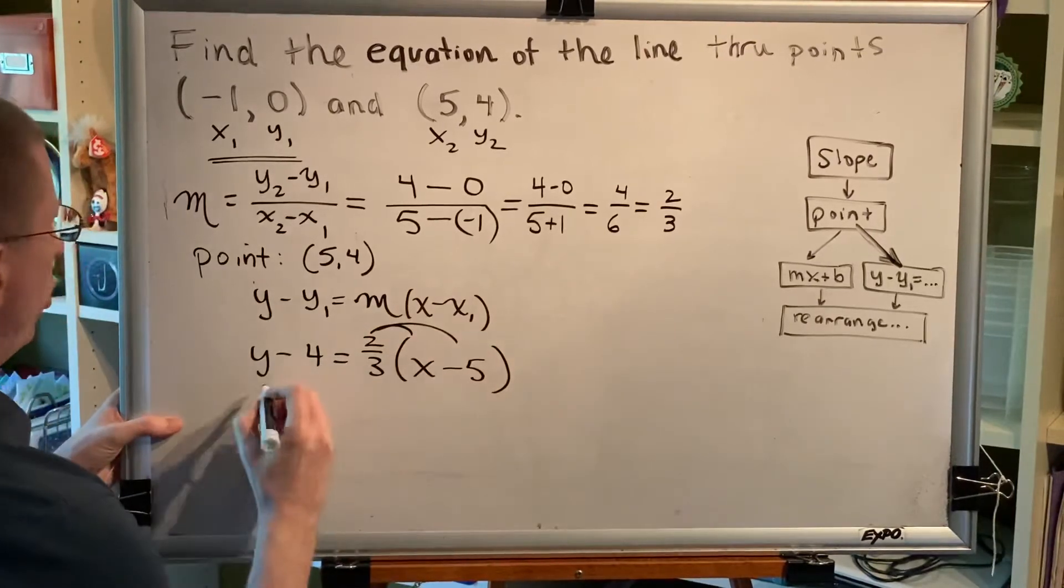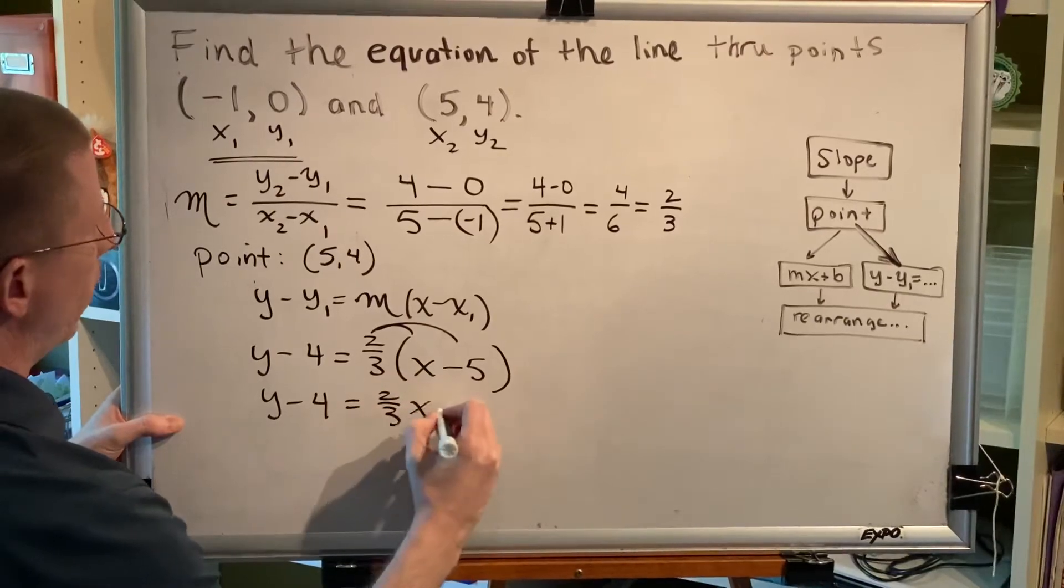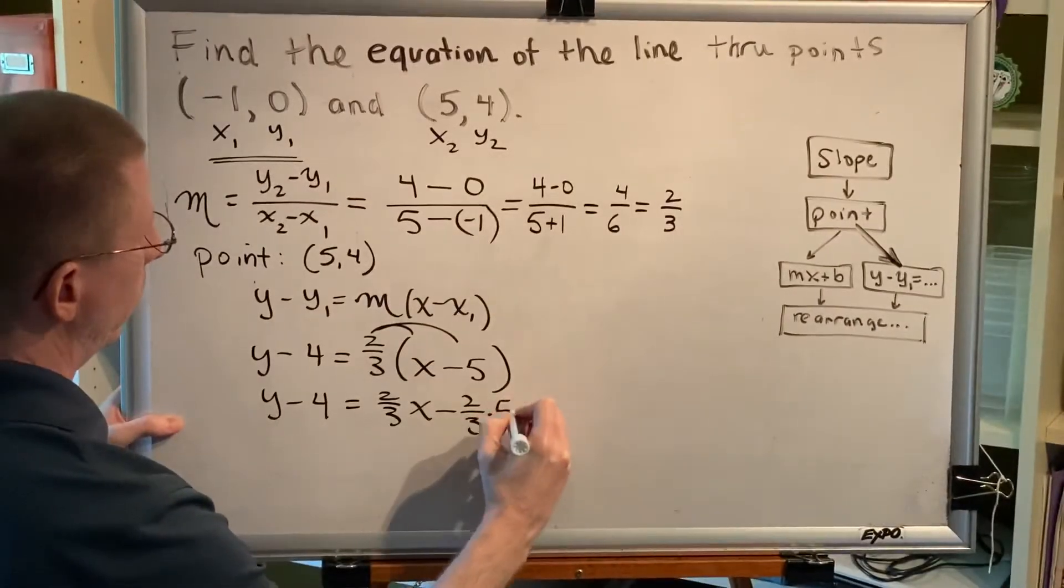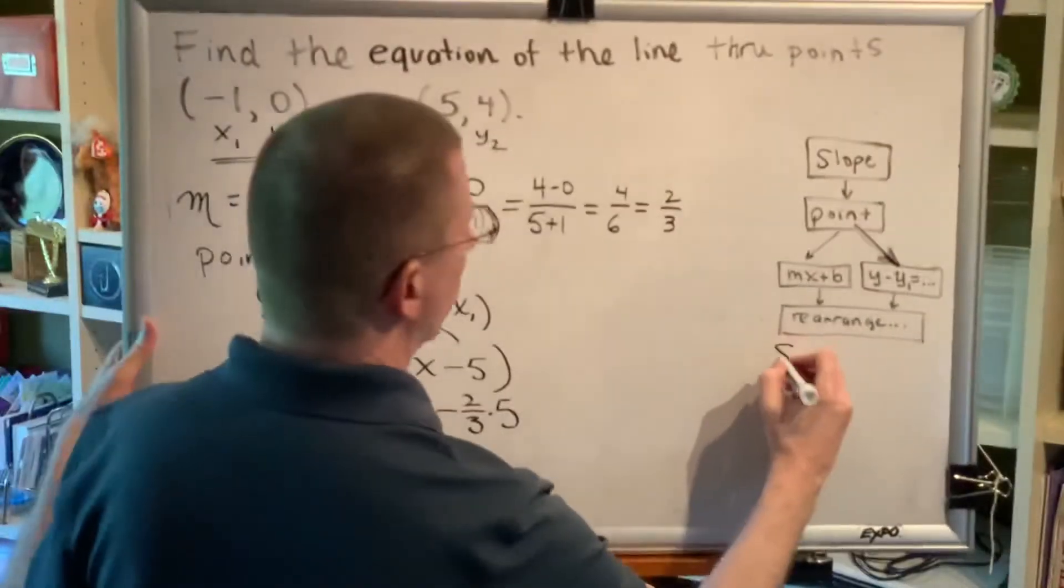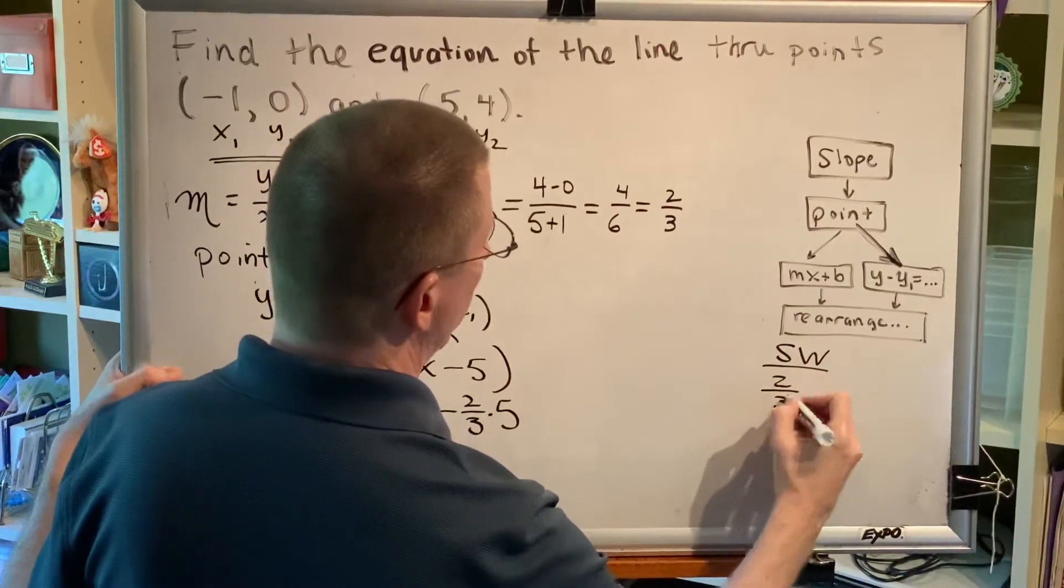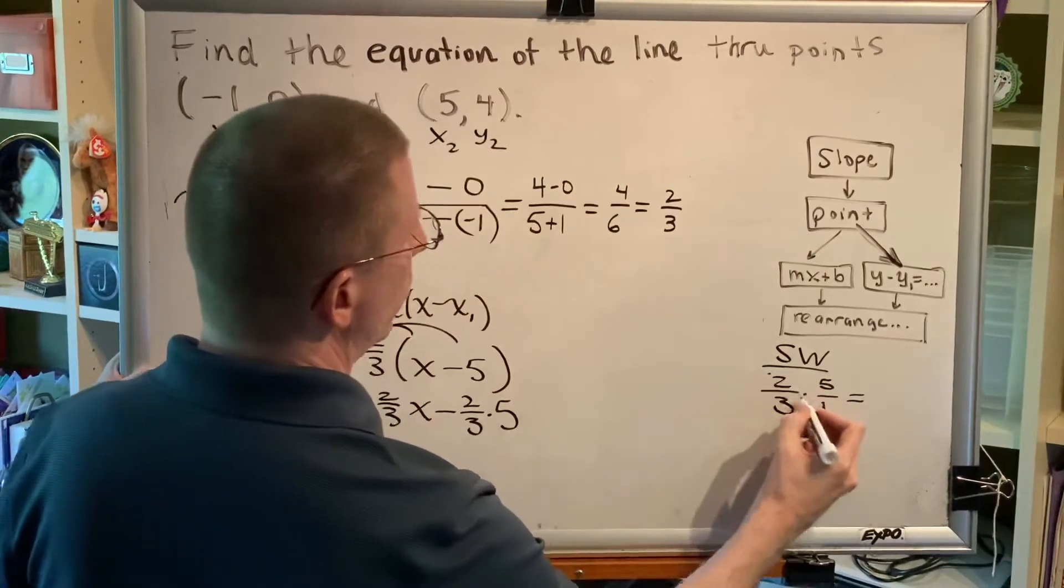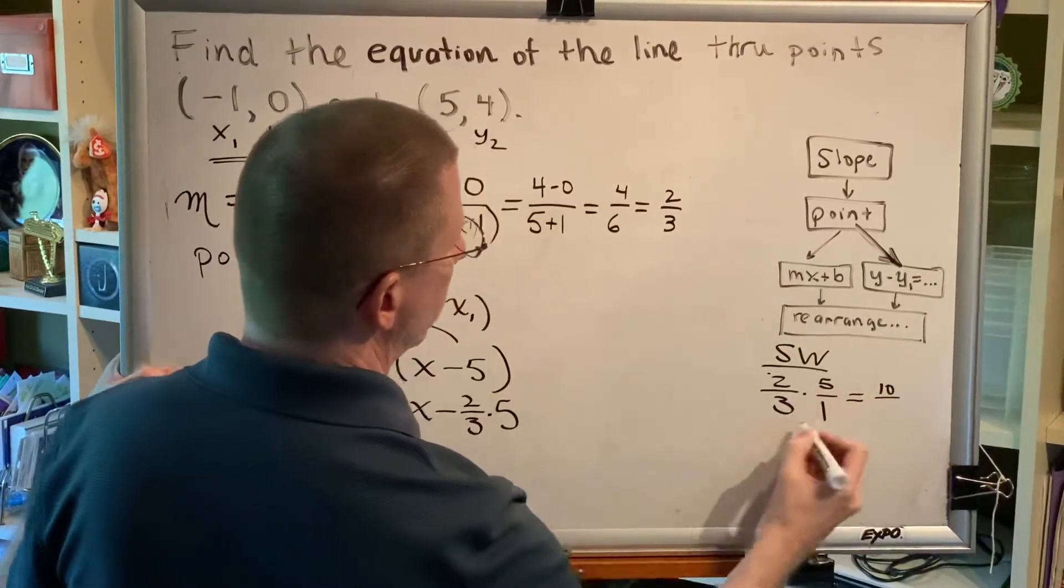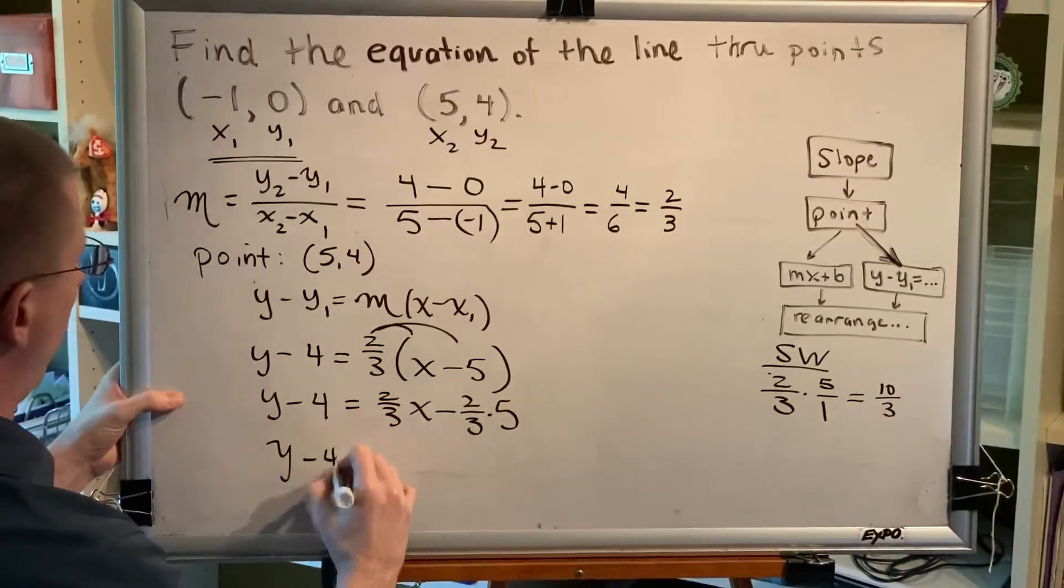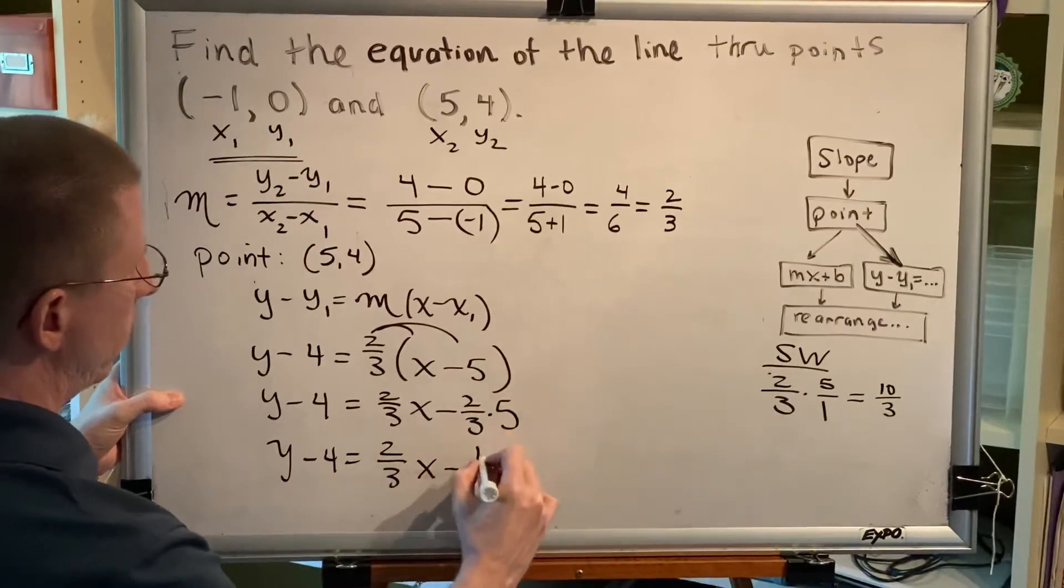We're going to distribute the 2/3 so we'll get y - 4 equals 2/3 x minus 2/3 times 5. We'll figure out that in our side workspace. 2/3 times 5 is the same thing as 2/3 times 5/1. Numerator 2 times 5 is 10. Denominator 3 times 1 is 3. So we get y - 4 equals 2/3 x minus 10/3.